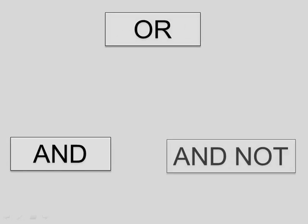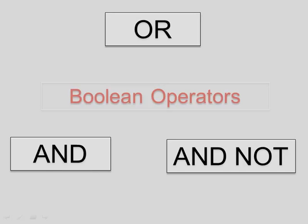Keyword searching is especially helpful for casting a large net if you haven't found enough sources. The connectors AND, OR, and AND NOT — also called Boolean operators — are useful in keyword searches.